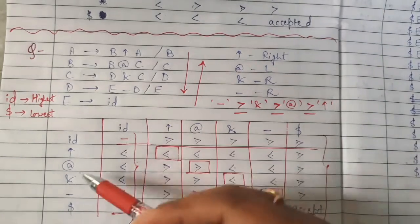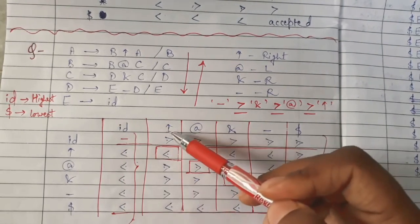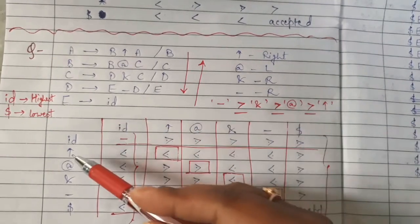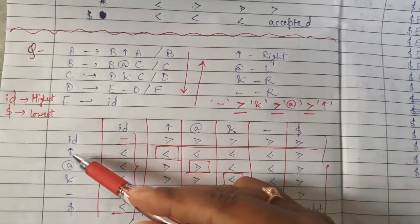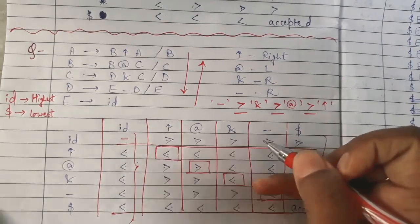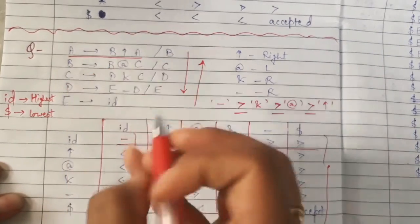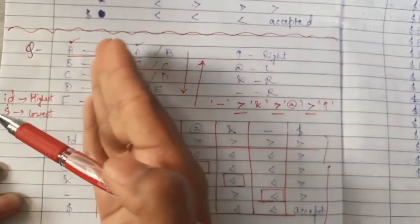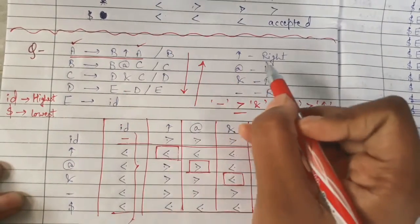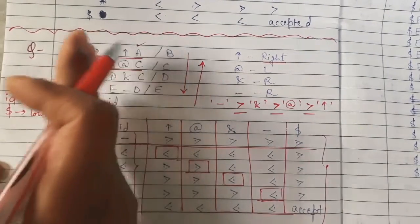Now for the four same-operator diagonal cells, we use associativity. Take exponential vs exponential: we need to check associativity from the grammar. Looking at the production A gives B exponential A — the non-terminal A appears on the rightmost side, so exponential is right associative. When right associative, we place less-than in that cell (the open side faces right).